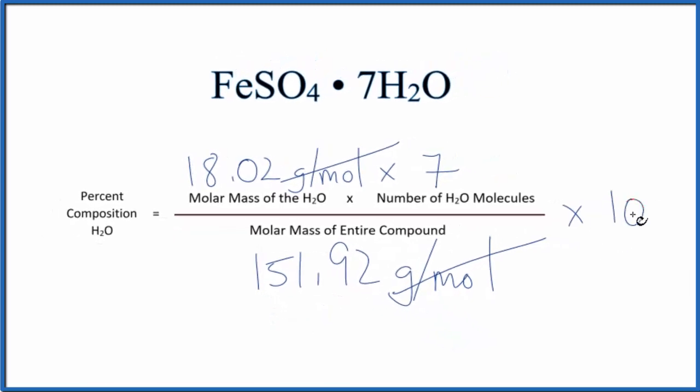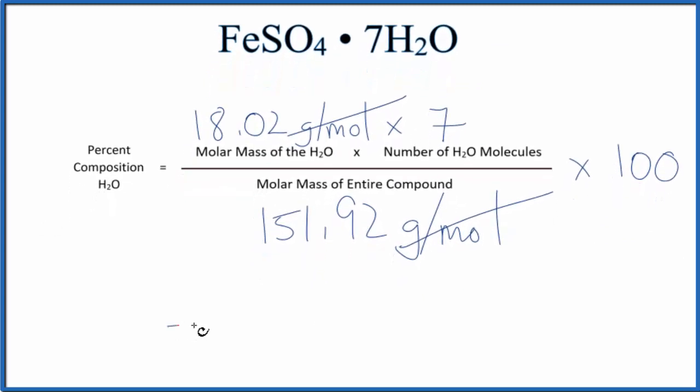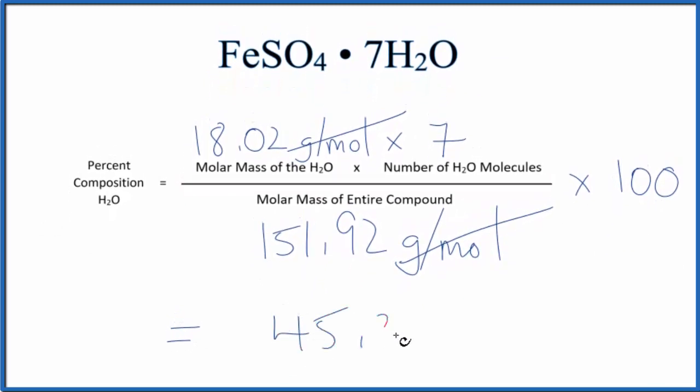We multiply this by a hundred to get a percent. We end up with 45.36 percent, and what this number means is that if we had a mass of iron(II) sulfate heptahydrate, 45.36 percent would be due to the water in the compound.